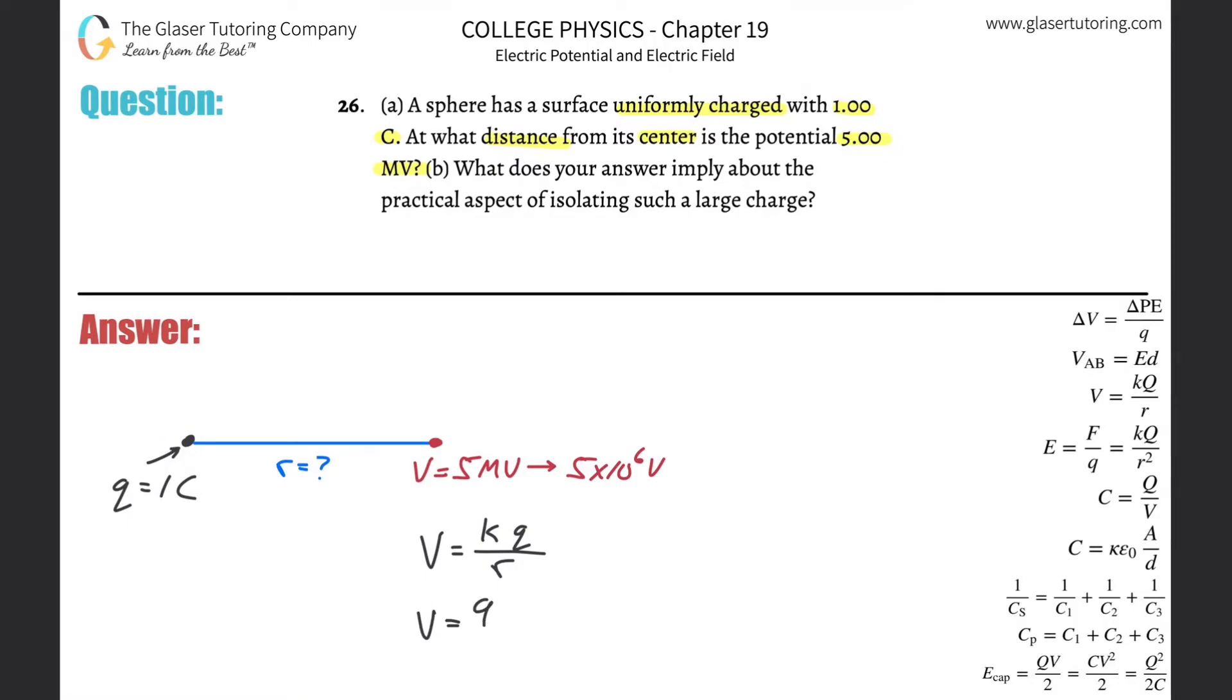Let's plug it in. So this is 9 times 10 to the ninth multiplied by the charge of 1 coulomb, all divided by that radius r. And the voltage we know...